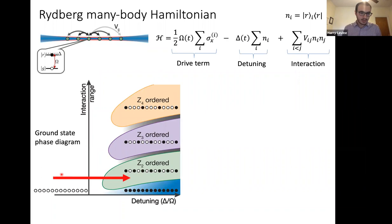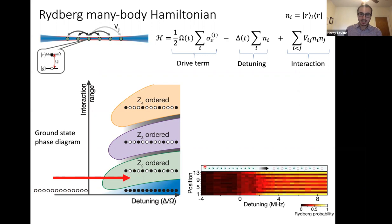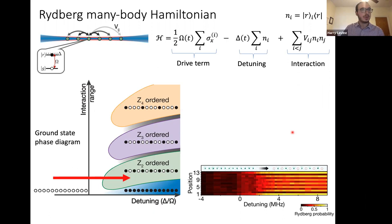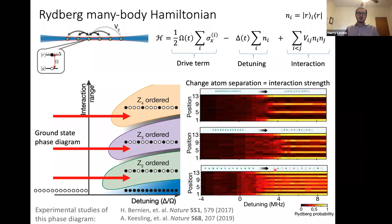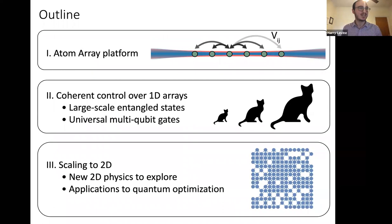Experimentally, the system is initialized with all atoms in the ground state and the laser detuning ramped from negative to positive. In a 13-atom chain, after ramping, every other atom is missing — highlighted as red circles denoting Rydberg atoms — demonstrating the Z2-ordered phase. By bringing atoms closer or farther apart, the effective blockade range changes, and phases with every third or fourth atom excited can also be observed.